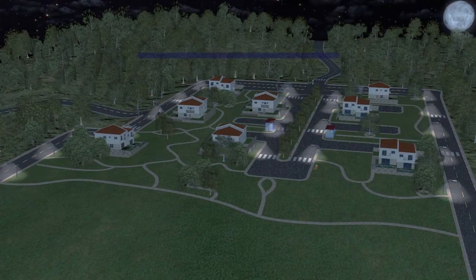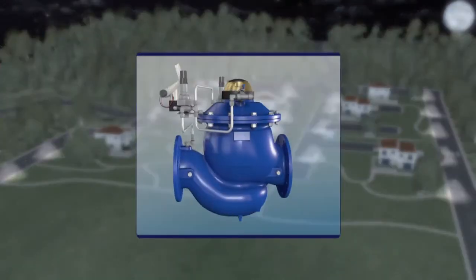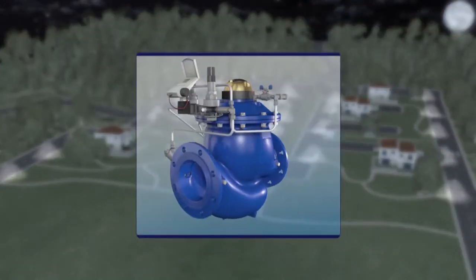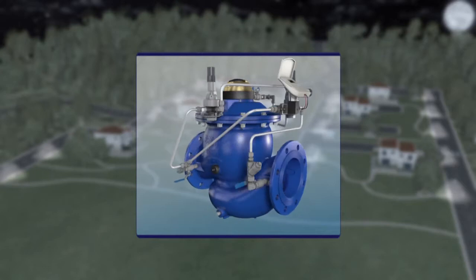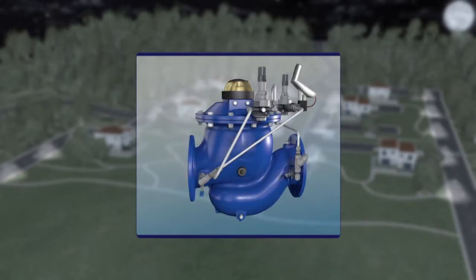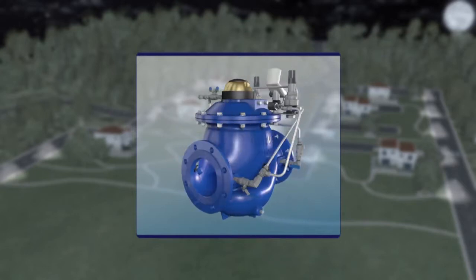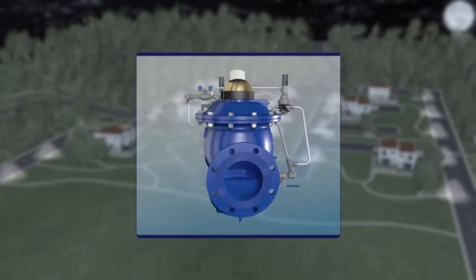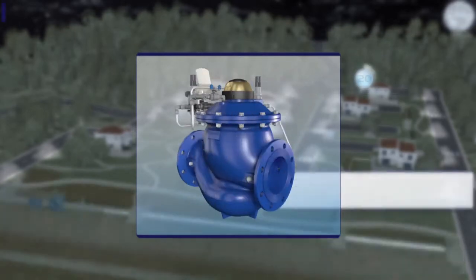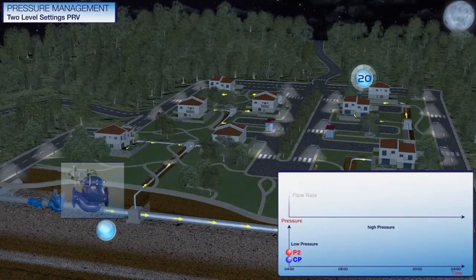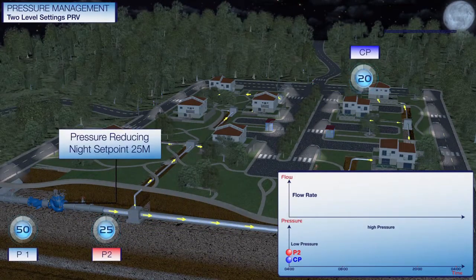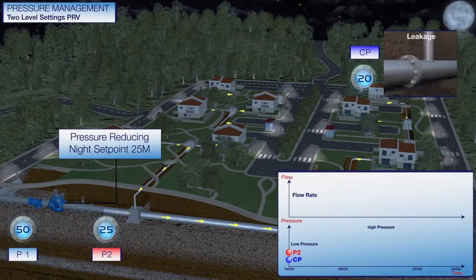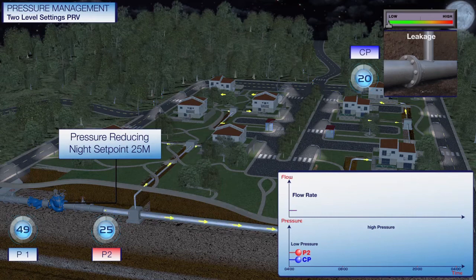In this neighborhood, the pressure is managed according to two pressure regime concepts. A Burmad dynamic PRV controlled by a time-based controller will change the downstream pressure accordingly.